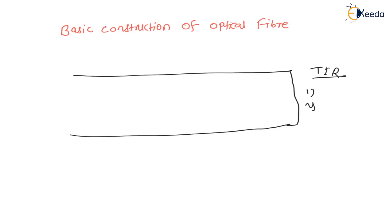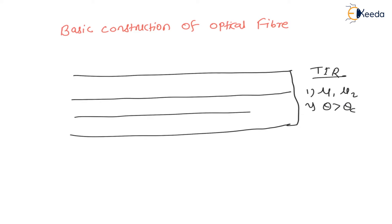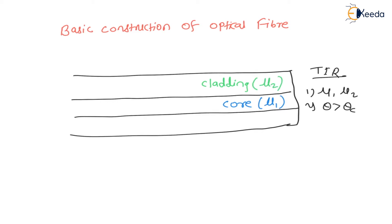The second condition is that the angle must be greater than the critical angle. Now let us consider two different materials. The first one — the inner part of the optical fiber — is called the core. Let its refractive index be mu1. The second one — the outer part — is called the cladding. Let its refractive index be mu2.